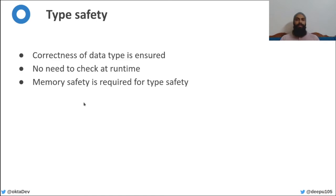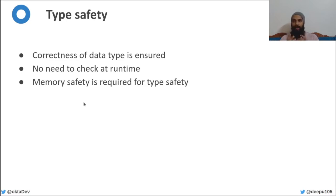In a type safe language, when you access a variable you access it as the correct type of data it is stored as. This gives us the confidence to work on data without having to manually check for the data type during runtime. Memory safety is required for a language to be type safe, so a type safe language lets us work with data without worrying about its type — we can be sure that an integer is actually an integer.